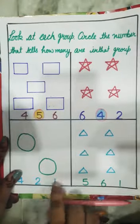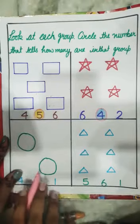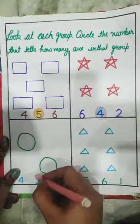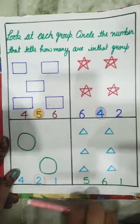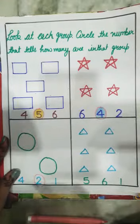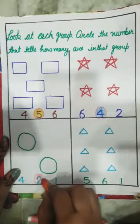Next we count circles. How many circles? One, two. Circle the number two and color it. Red color.